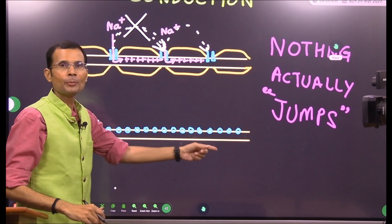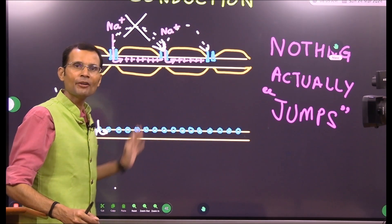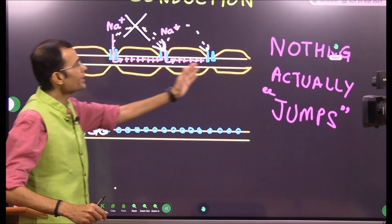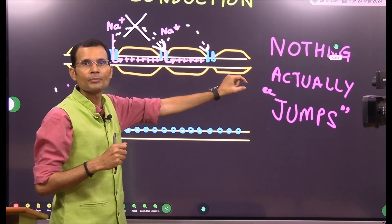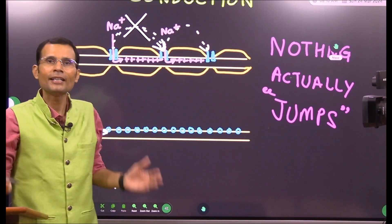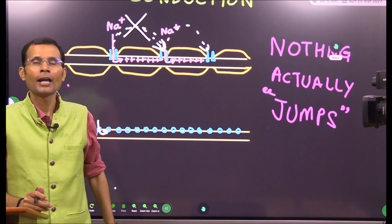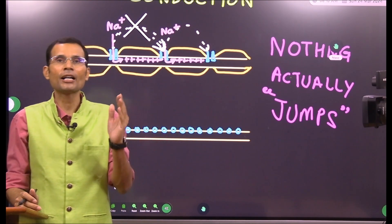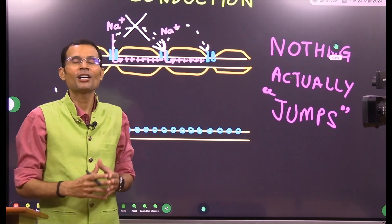In the unmyelinated nerve fiber, recharging takes place at more points — every point shows recharging — spending more ATPs. In the myelinated nerve fiber, recharging occurs only at the nodes of Ranvier. Fewer points show recharging, meaning fewer sodium-potassium pumps are performing this function, so less ATP is spent. Therefore less energy is spent for saltatory conduction. These two — greater speed and less energy expenditure — are the advantages of saltatory conduction.